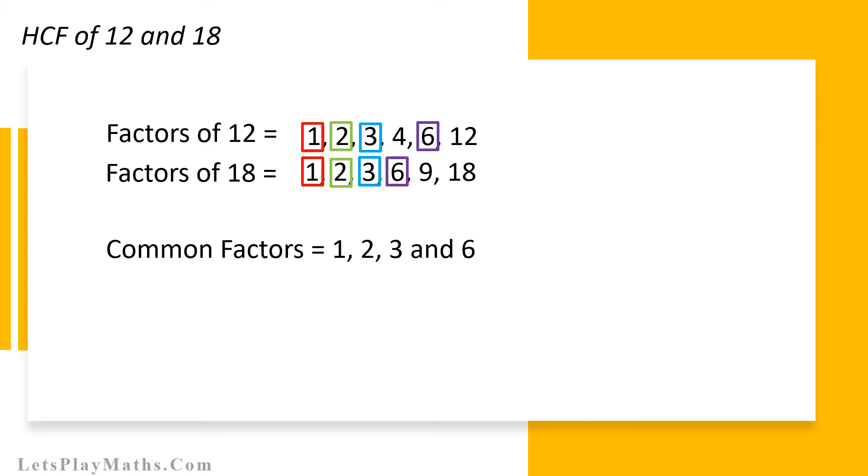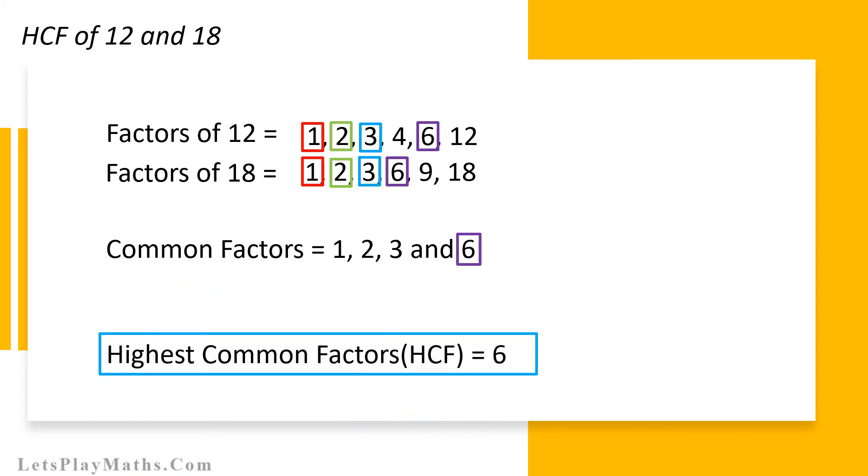We have to choose the largest number between 1, 2, 3 and 6. And we know 6 is the largest number among these common factors. So HCF of 12 and 18 is 6.